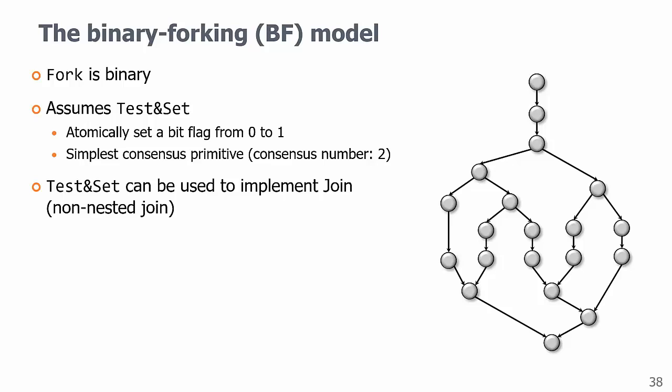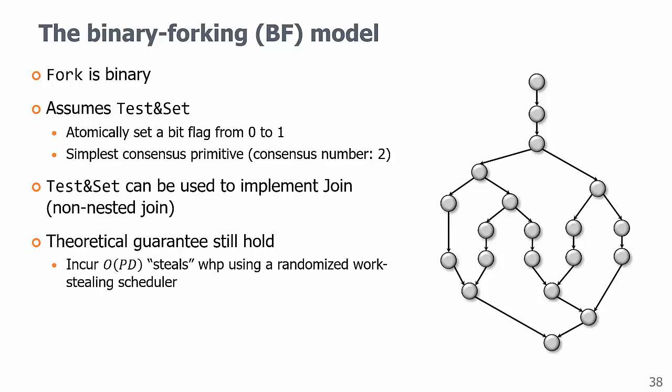And as a wrap up, the binary forking model: fork is binary, it assumes test and set, and we can use it to implement join and non-nested join. All existing theoretical guarantees still hold. This is our base model that extends the basic binary fork join model. It's more general, but makes no more assumptions for hardware.